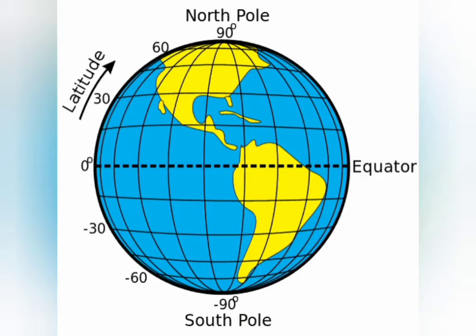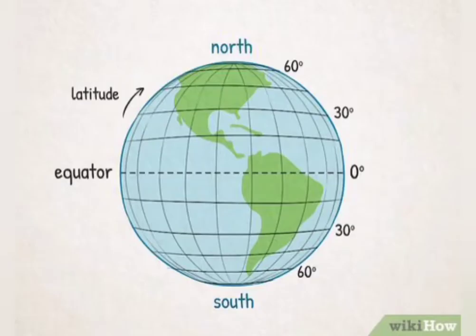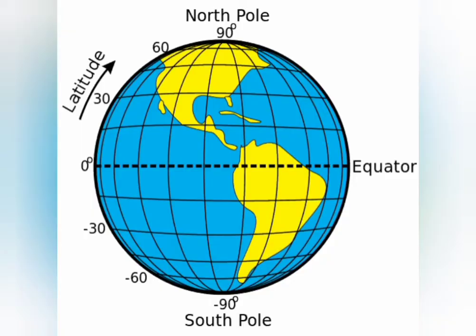In the Northern Hemisphere, the latitudes are designated as degrees north — for instance, 10° North, 20° North, and so on till 90° North, which is the North Pole. Similarly, in the Southern Hemisphere, latitudes are designated as degrees south — 10° South, 20° South, and so on till 90° South. Longitudes are also identified with the help of degrees.